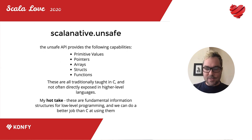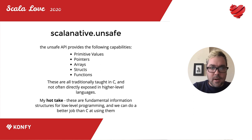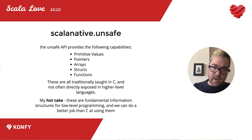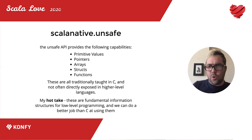Let's talk about the actual Scala Native unsafe API — what it does, what it looks like, and what's going on behind the curtains. Basically the unsafe API provides the fundamental capabilities that C provides: primitive values — ints, bytes, longs, floats — pointers, arrays, structs, and C-style static functions. These are all things traditionally taught in a systems programming course that aren't always directly exposed at the raw level in higher-level languages.